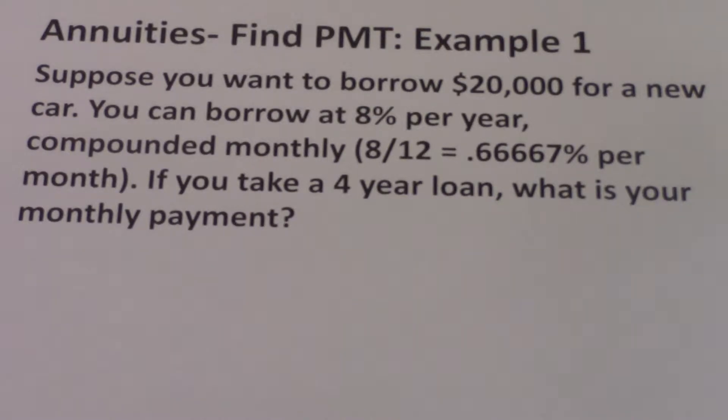This is a loan, so the $20,000 is a present value. You get the $20,000 today, or the bank gives the seller of the car the $20,000 on your behalf, and then you pay for it in increments later.